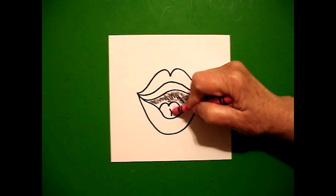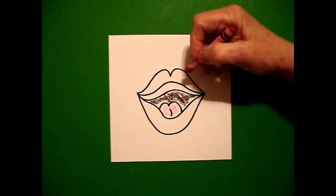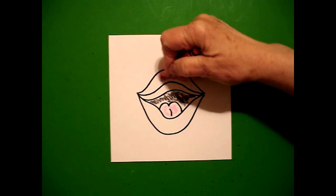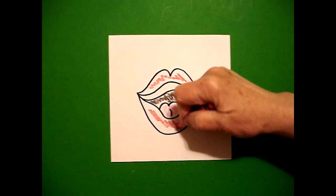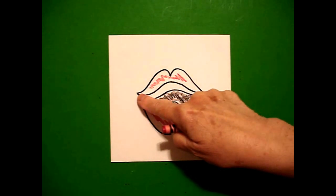This is the tongue. I'm going to color this pink. And this is the upper lip. That's going to be red. Bottom lip, red. And leave this strip white. These are the teeth.